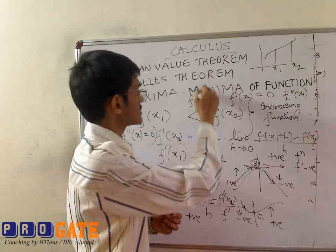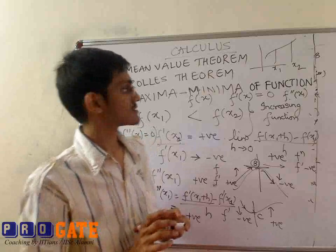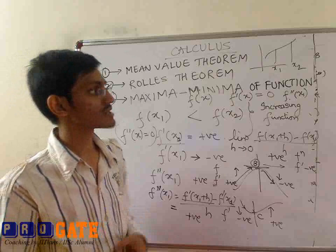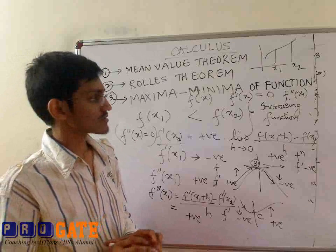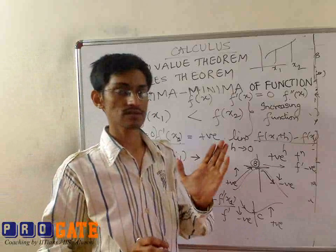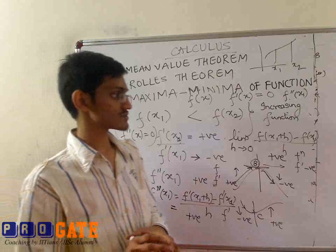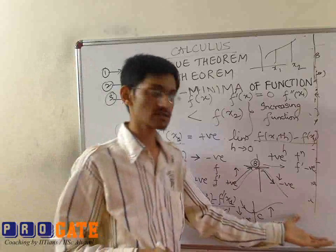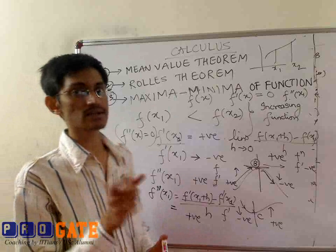That's all with the maxima and minima of a function. In this session, the minor topics we dealt with are the mean value theorem, Rolle's theorem, and maxima and minima of a function. To get the absolute maxima and minima, we have to compare all the local maximas and local minimas — the one with the least value would be the absolute minima, and the one with the highest value would be the absolute maxima for that function in that given interval.